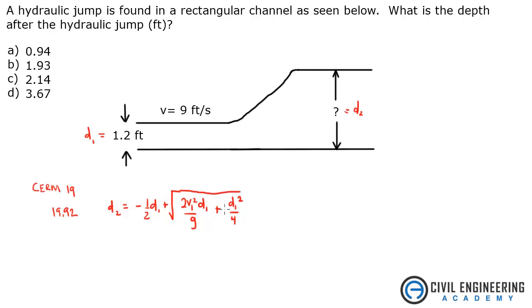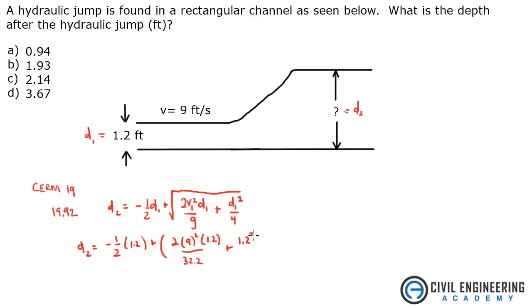All of that is under the square root. The rest we just plug and chug. d2 equals negative one-half times 1.2 feet, plus the square root of: 2 times (9 feet per second) squared times 1.2 feet divided by 32.2 feet per second squared, plus (1.2 feet) squared divided by 4. That gives us d2 equals negative 0.6 plus the square root of 6.037 plus 0.36.